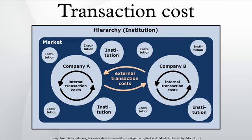The idea that transactions form the basis of economic thinking was introduced by the institutional economist John R. Commons. He said that these individual actions are really transactions instead of either individual behavior or the exchange of commodities. It is this shift from commodities and individuals to transactions and working rules of collective action that marks the transition from the classical and hedonic schools to the institutional schools of economic thinking.